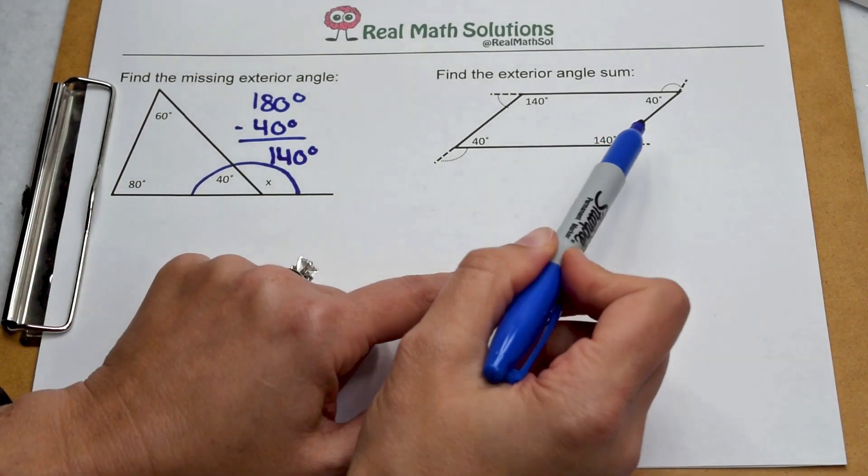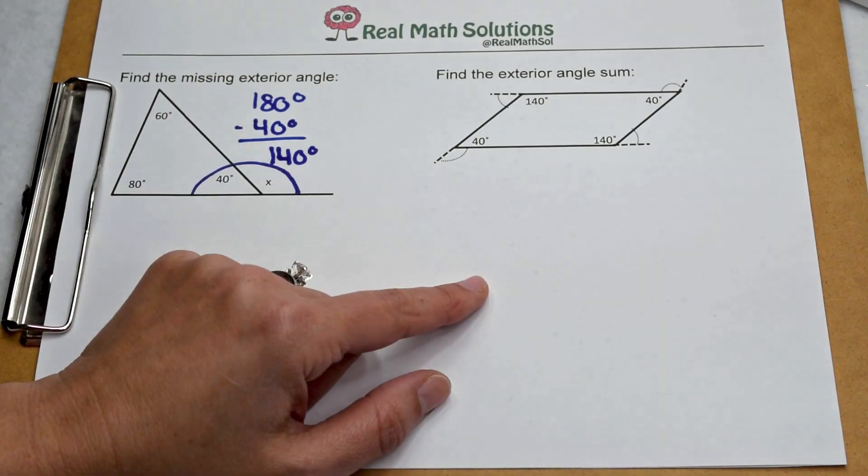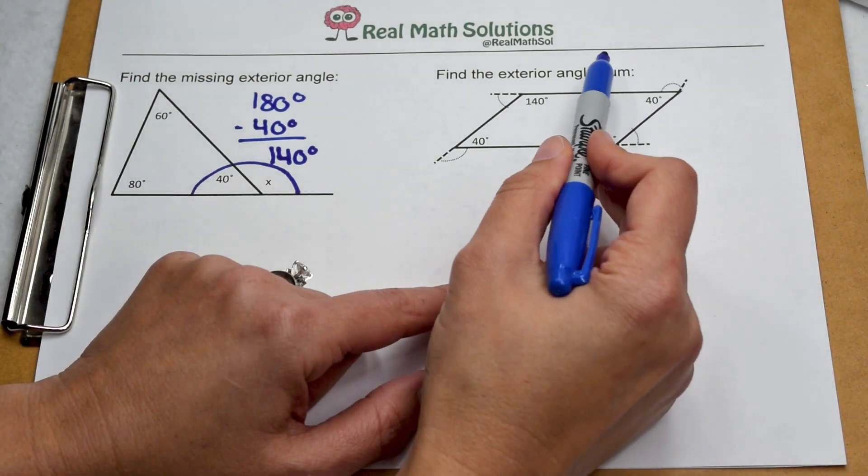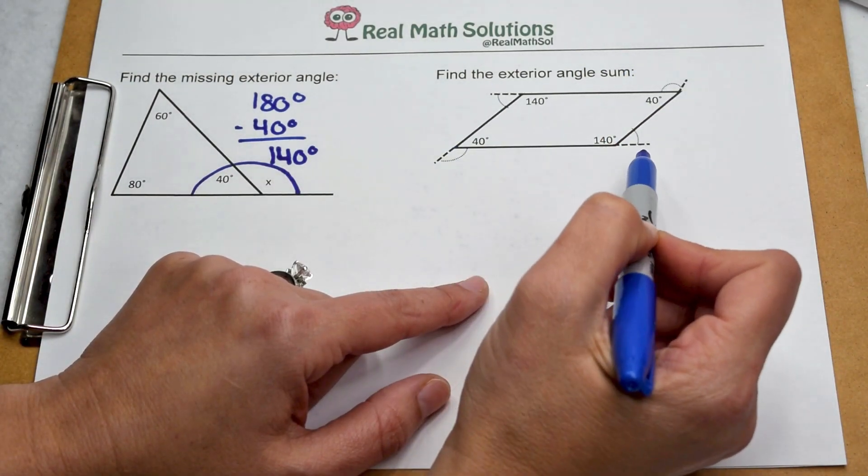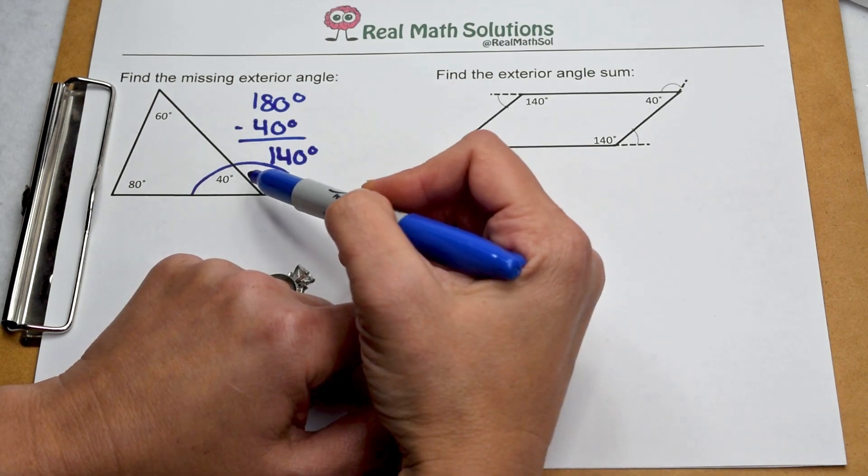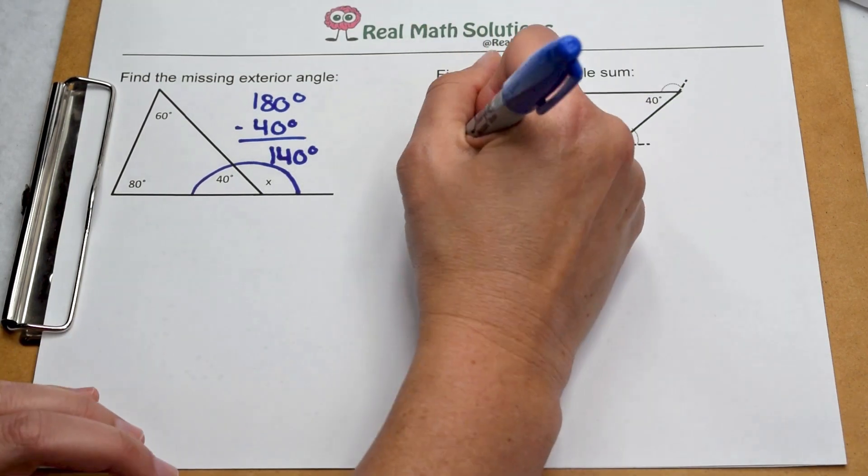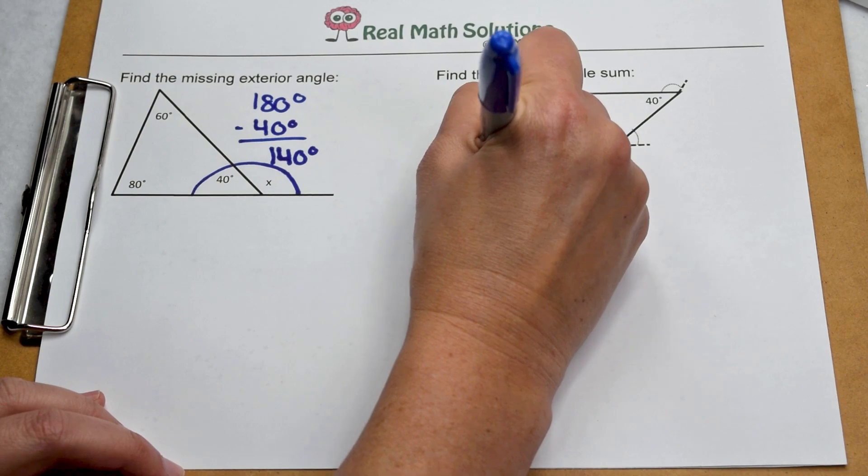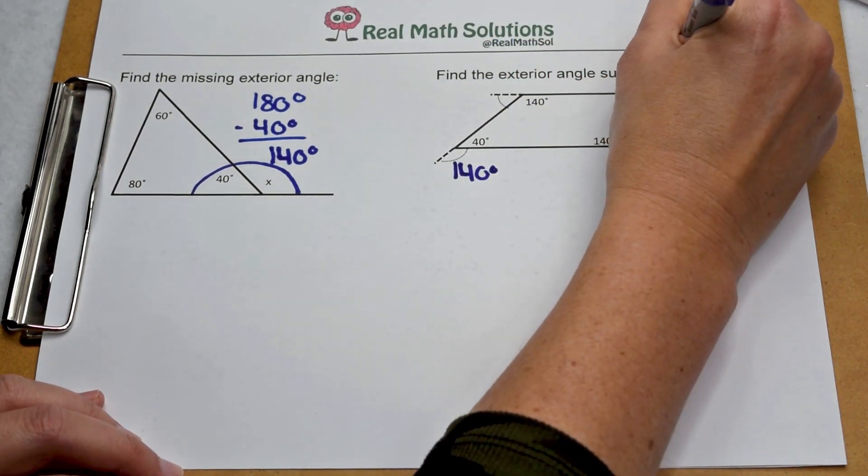Over here on this parallelogram, we need to find the exterior angle sum. There's a couple ways we can go about doing this. The first way is to find all the exterior angles and find their sum. Well, we already know from our triangle that if the interior angle is 40, the exterior angle is 140. So we can go ahead and fill those in.